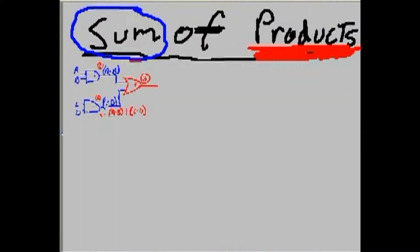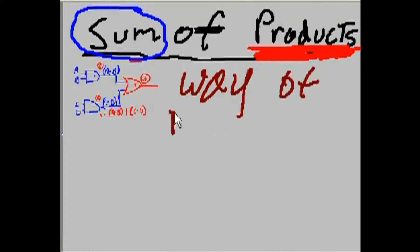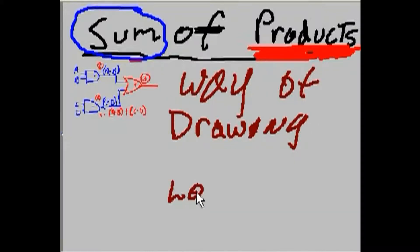So, in the end, what is the sum of products? It's a way of drawing something. I shrunk my circuit over here. It's a way of drawing something. What do you mean drawing something? What do you mean by something? It's a way of drawing logic circuits. Well, what kind of circuits? It's the combo circuits, the combinatorial circuits, the combo logic circuits. It's a way of drawing them.